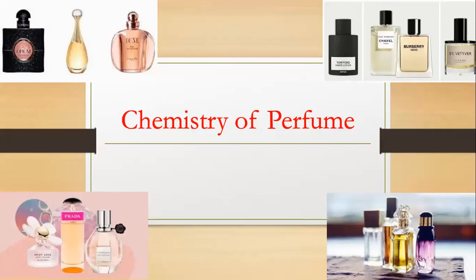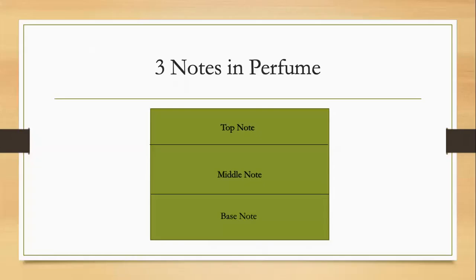Hello, everyone. Today I'm going to share about the chemistry of perfume. There are three notes in perfume: the top note, middle note, and the base note. For today's presentation, I will share about the compounds found in the three notes and end with a simple procedure on making perfume.